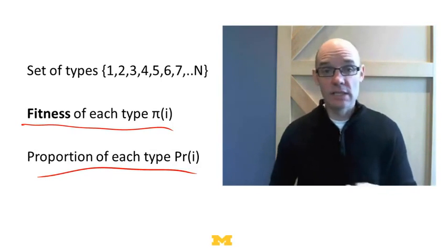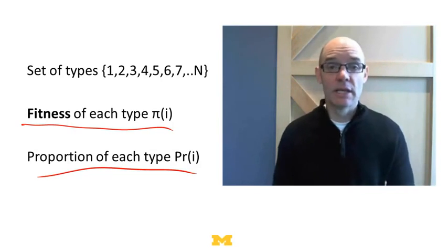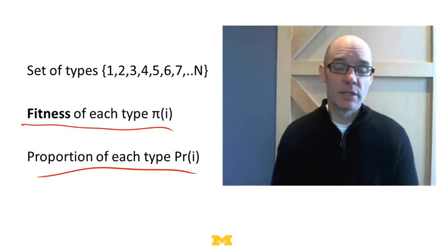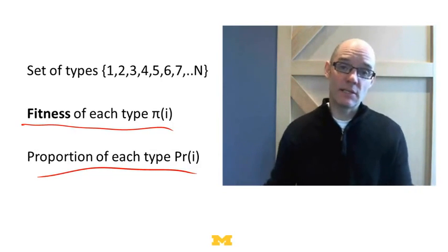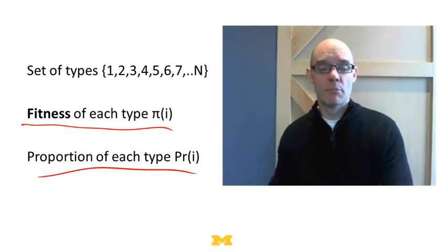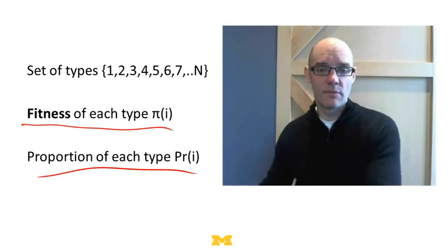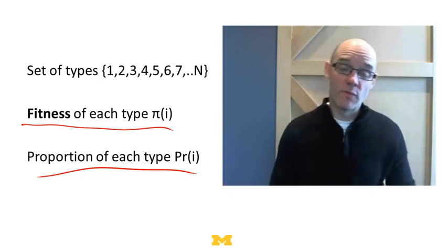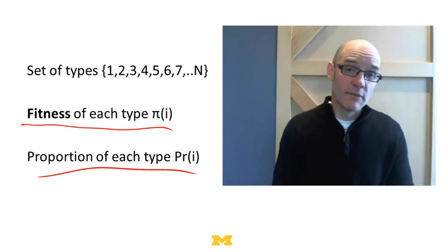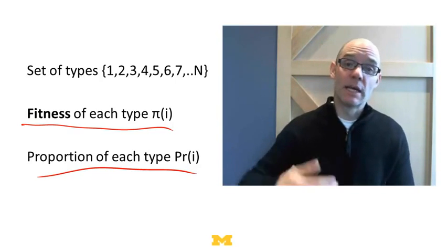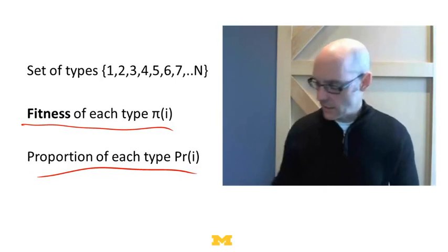We can think of the exact same logic: how many of each type are going to get reproduced in the next population? It's going to depend on the fitness of each type and on the proportion, because the more birds there are of a particular phenotype, the more offspring they're going to have. But also, the more fit a particular type is, the more offspring it's going to have. So fitness and proportion determine how many there'll be in the next population.